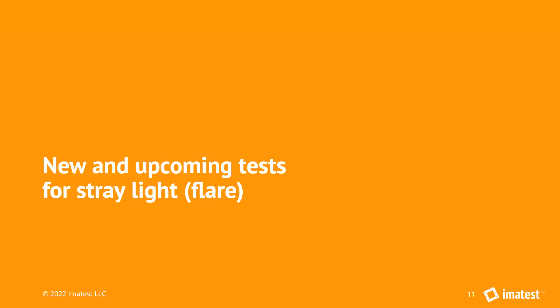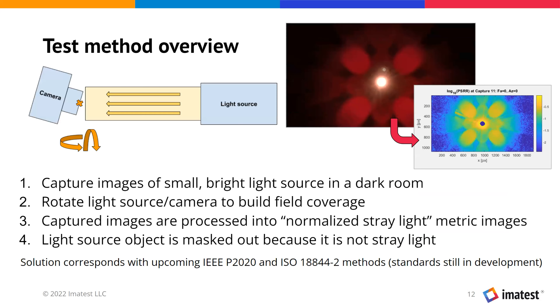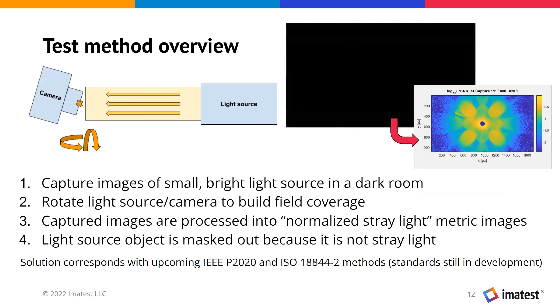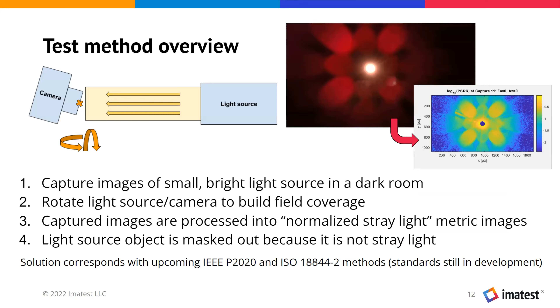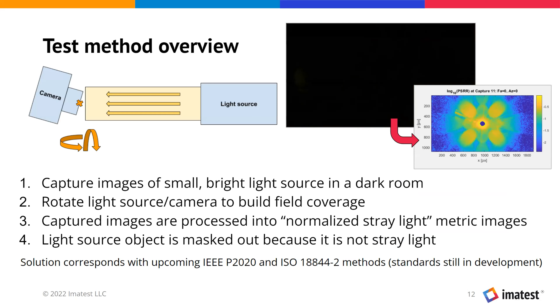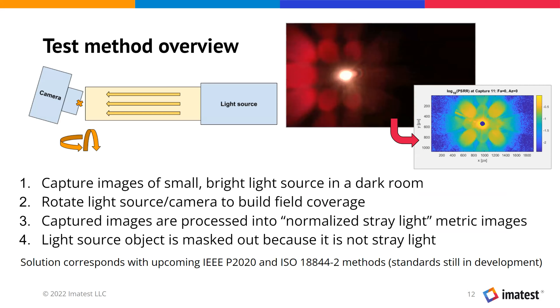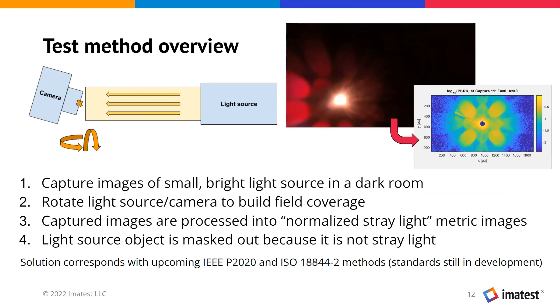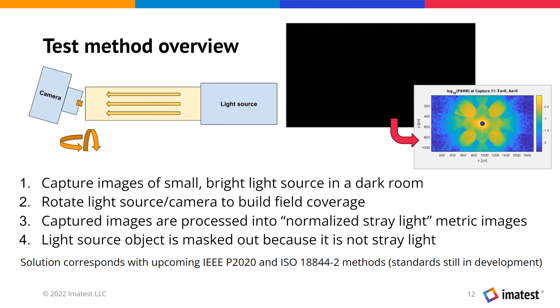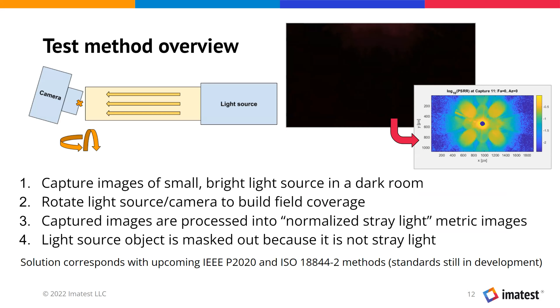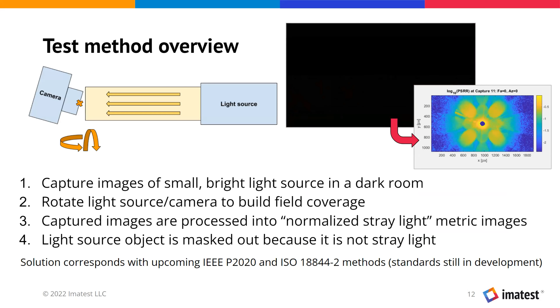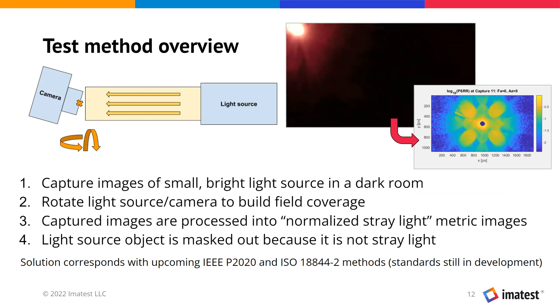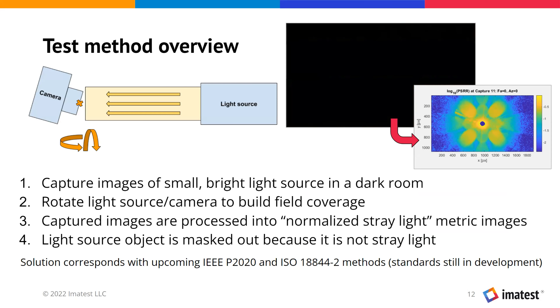Now let's talk about new and upcoming tests for stray light testing. Here's an overview of the test method — it's quite simple in practice. All you're doing is capturing images of a small, bright light source in a dark room. To build field coverage, you can rotate the camera or rotate the light source around the camera and capture multiple images. Then you take those captured images and process them into what we're calling normalized stray light metric images.